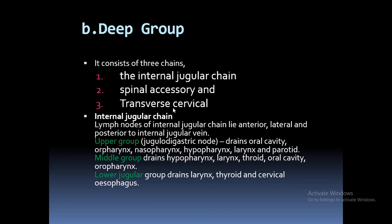The lymph nodes of the internal jugular chain lie anterior, lateral, and posterior to the internal jugular vein, and are grouped into upper, middle, and lower groups. The upper group drains the oral cavity, oropharynx, nasopharynx, hypopharynx, larynx, and parotid — also called level 2 cervical lymph nodes. The middle group drains the hypopharynx, larynx, thyroid, oral cavity, and oropharynx — also called level 3 cervical lymph nodes. The lower jugular group drains the larynx, thyroid, and cervical esophagus — also called level 4 cervical lymph nodes.